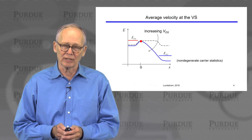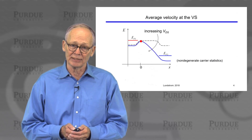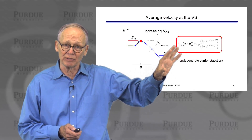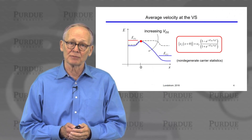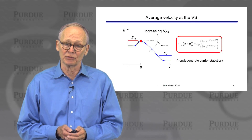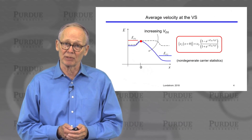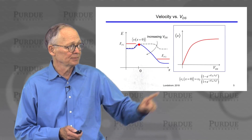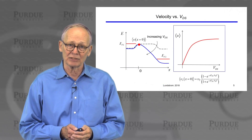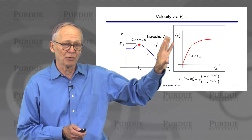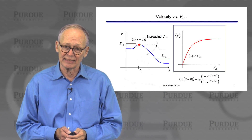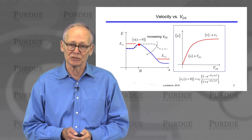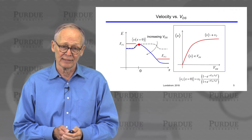We're going to focus first on how that velocity changes as we increase the drain-to-source voltage. The result is very simple. By equating those two expressions for the drain current, we get a very simple expression for the average velocity at the virtual source as a function of drain-to-source voltage. As we increase VDS from a small value to a large value, the average velocity at the virtual source will increase at first linearly, and then it will saturate. For small VDS, the average velocity is proportional to VDS. For large VDS, it becomes independent of VDS and saturates at the unidirectional thermal velocity.